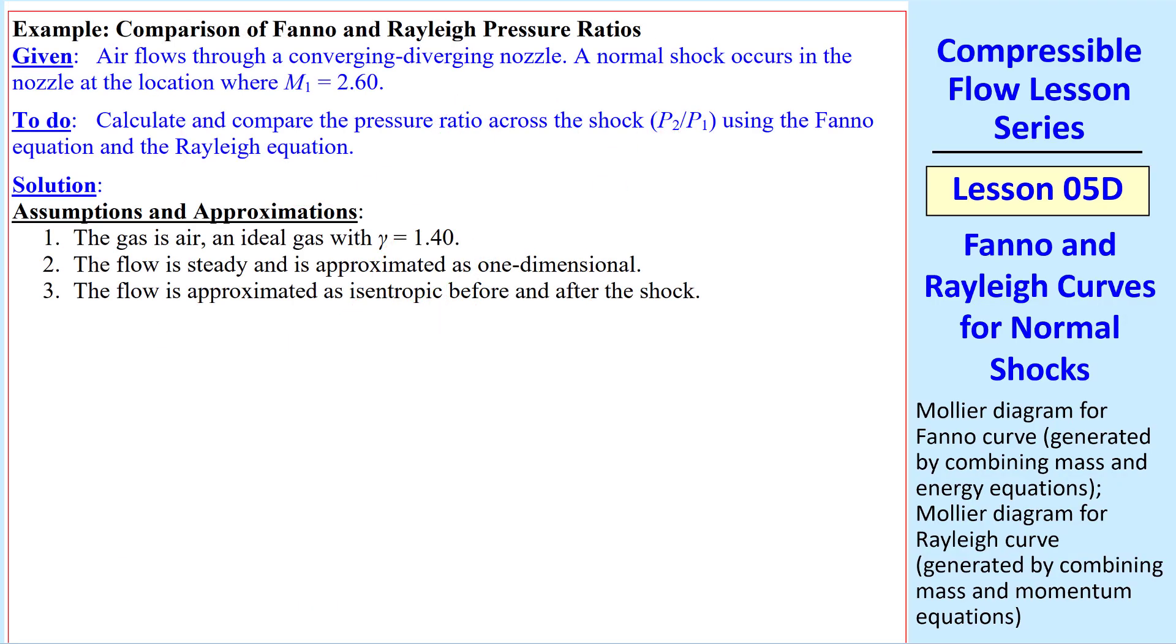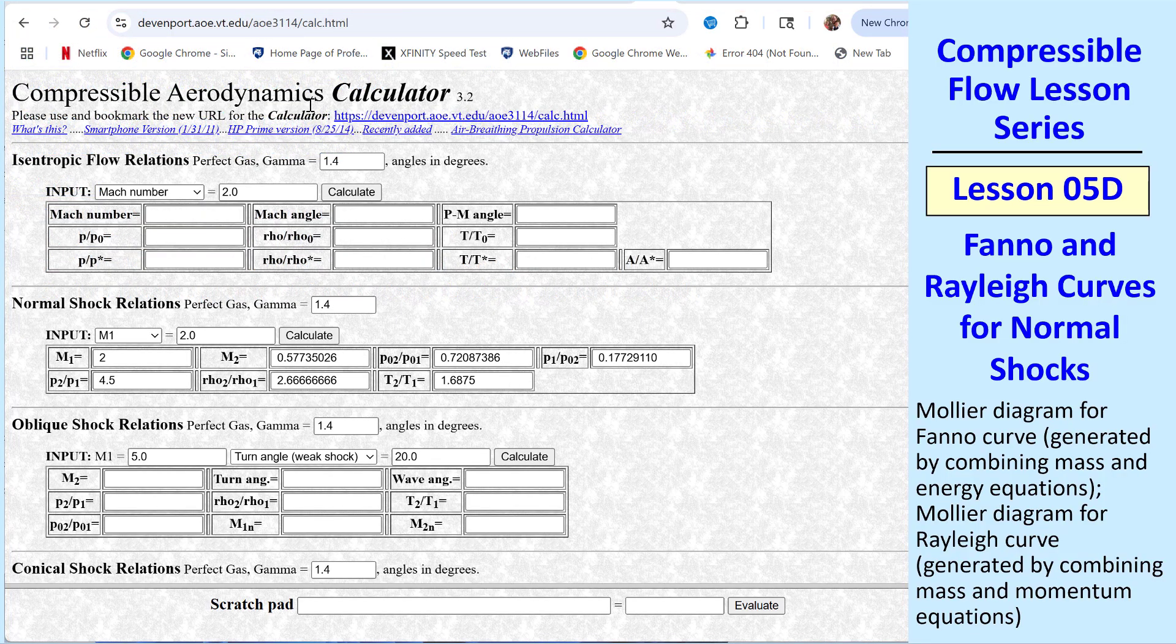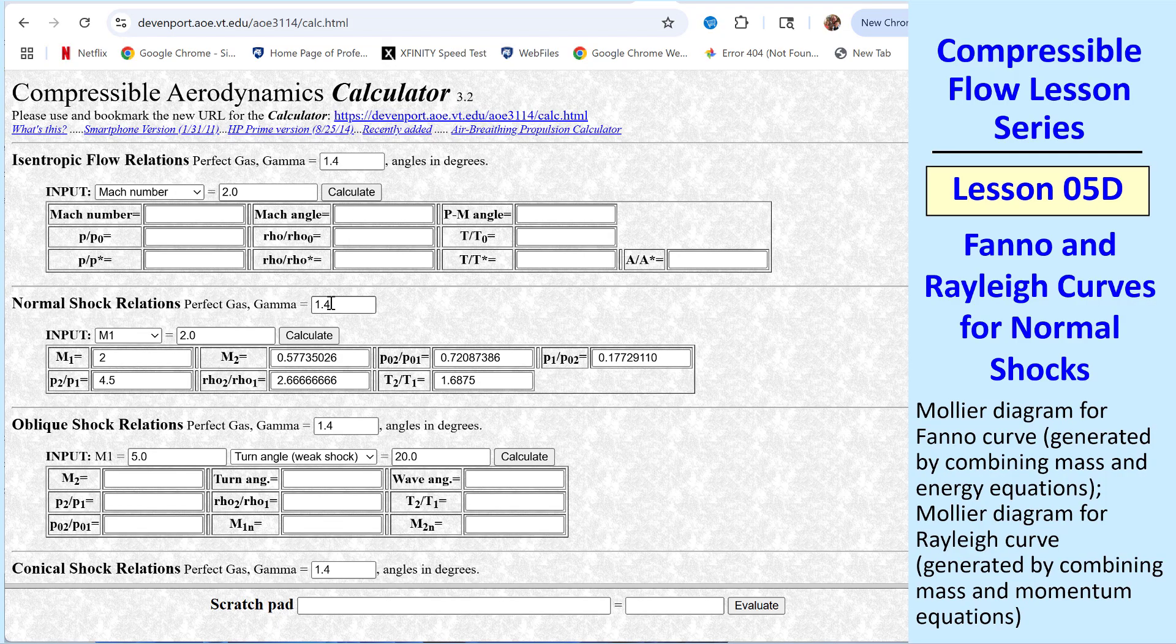Let's do a quick comparison of Fanno and Rayleigh pressure ratios. We have air flowing through a CD nozzle, and a normal shock occurs where M1 is 2.60. Let's calculate and compare the pressure ratio P2 over P1 across the shock using both Fanno and Rayleigh. Here's my ANA, ideal gas air with given gamma, steady, 1D, and isentropic before and after the shock. Since we don't know yet how to calculate M2, I'll use the Compressible Aerodynamics Calculator online, where at gamma equal 1.40 and M1 equal 2.60, we can calculate the downstream Mach number M2. I'll show you this quickly. On the Compressible Aerodynamics Calculator, we go to the normal shock relations, where gamma of 1.4 is the default, and we type in our Mach number 1, 2.6, and hit Calculate, and we see that Mach number 2 is 0.50387, and P2 over P1 is 7.7200.